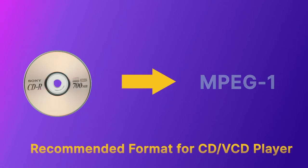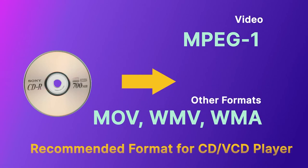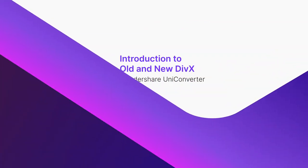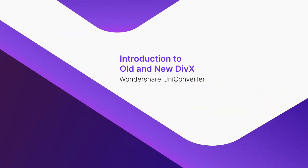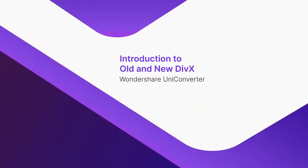Part 2: Recommended formats for CD or VCD players. A typical compact disc uses MPEG1 for videos. Other formats that a CD or VCD may use include MOV, WMV, or WMA.